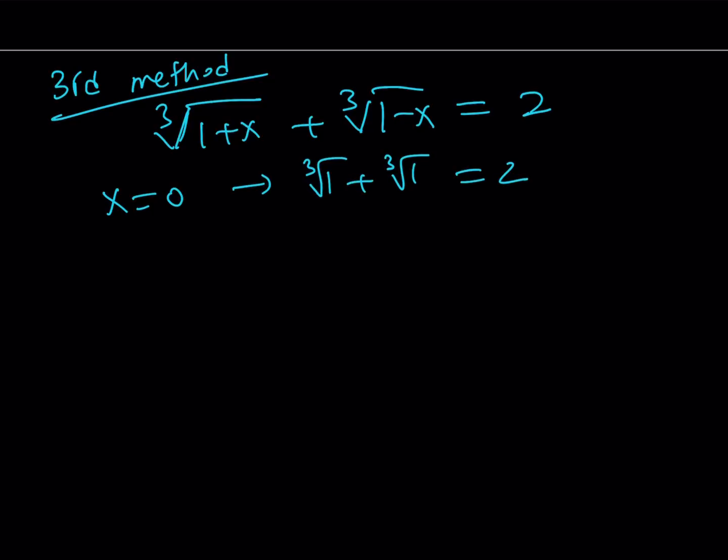Now, the problem with this method is how can you verify that X equals 0 is the only solution? Obviously, you kind of have to do more to verify that this is the only solution. But we're not going to get into that. I'm also going to talk about the graph and how this function behaves. Let's go ahead and take a look at the graph now.